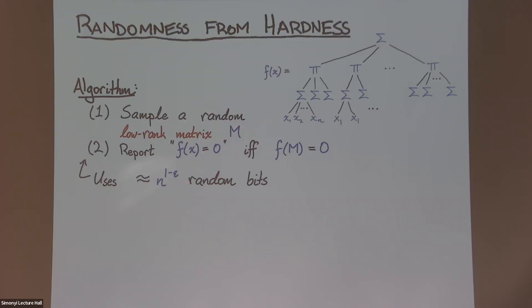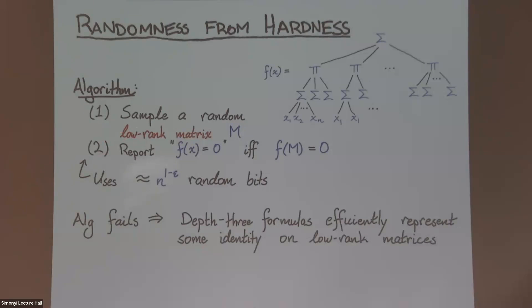But why should this work? Well, let's think about this. If this algorithm were to fail, what does that mean? I have some small formula, and every time I throw a low-rank matrix at it, it spits back zero. So, really what it's doing is, we have some formula that computes some identity of low-rank matrices. And if you want, you could replace the word low-rank with singular, and this is essentially saying, you know, this formula is something like the determinant. And in fact, that's true even when I have the words low-rank here. We were able to show that you can massage whatever this identity is into an honest-to-goodness representation of the determinant.